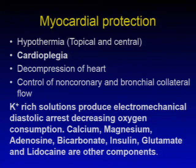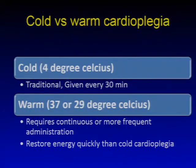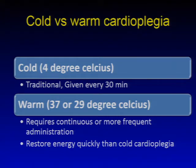Potassium-rich solutions produce electromechanical diastolic arrest, decreasing oxygen consumption. Other components of cardioplegia include calcium, magnesium, adenosine, bicarbonate, insulin, glutamate, and lidocaine. Cold cardioplegia is administered at 4°C, given every 30 minutes via antegrade or retrograde routes. Warm cardioplegia at 37°C or 29°C requires continuous infusion unlike the intermittent cold approach. Warm cardioplegia restores energy more quickly than cold cardioplegia.